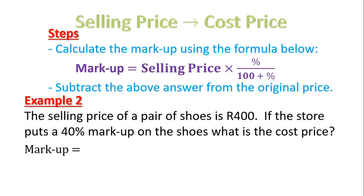We start off with our formula. My markup equals my selling price. So what is my selling price? My selling price is R400. Then I multiply that, and now I use a fraction. What is my markup? It's 40 percent, so I write 40 at the top. Then in my denominator or at the bottom, I write 100 plus, and again, then it's 40 because that is my markup. See where I've written 40 in the numerator or the top, and in the denominator I've gone 100 plus 40.